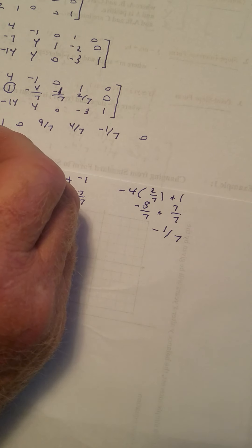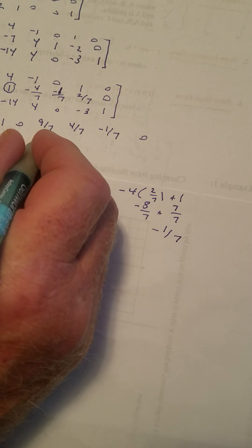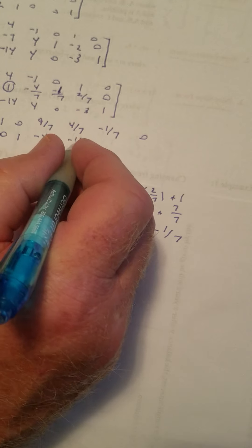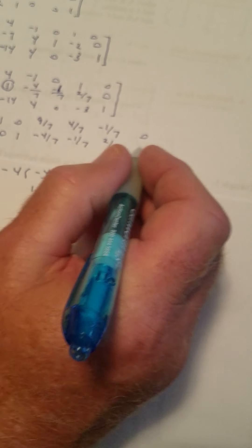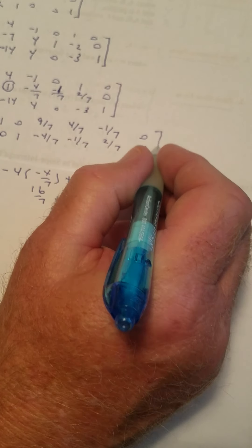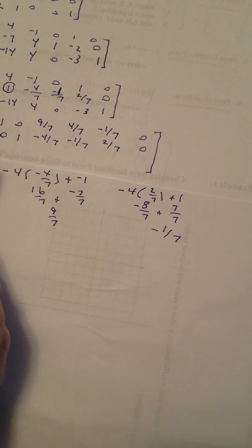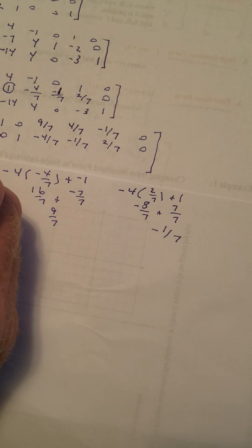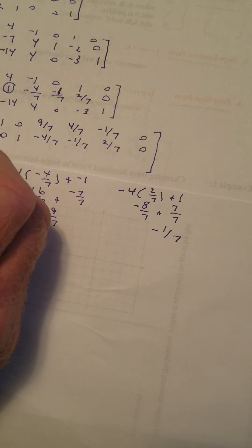Second row stays the same: 0, 1, -4/7, -1/7, 2/7, 0. And on the bottom row we're going to multiply by 14 and add — so 14 times row 2 plus row 3.